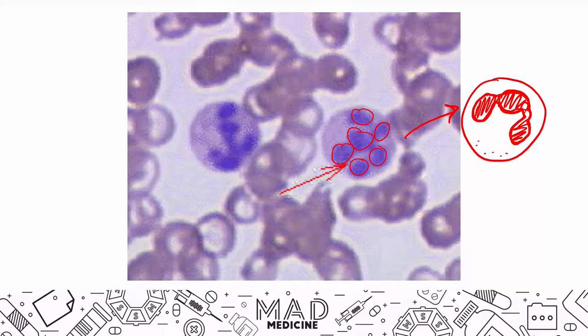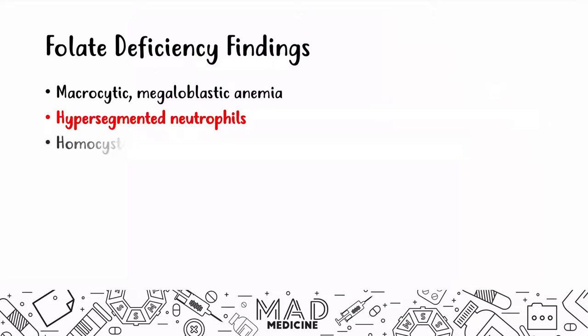Because you have defective RNA and DNA synthesis, the white blood cells are not able to get rid of those extra lobes, and that's why you get the hypersegmented neutrophils. Very high yield.